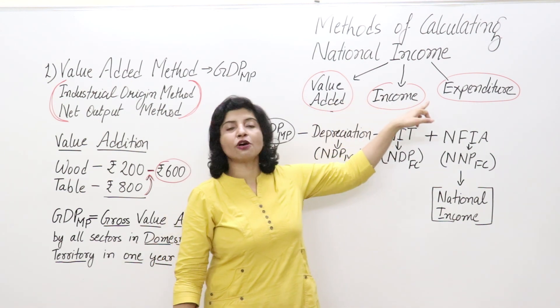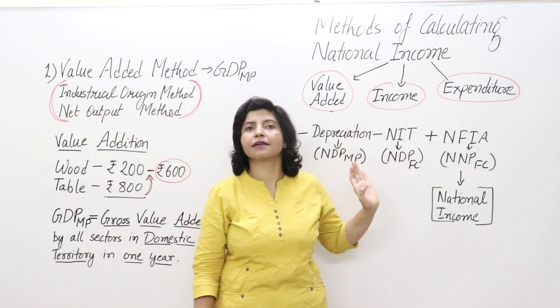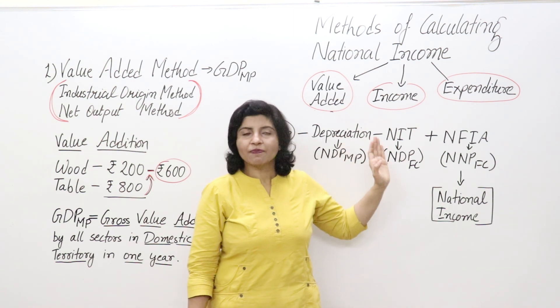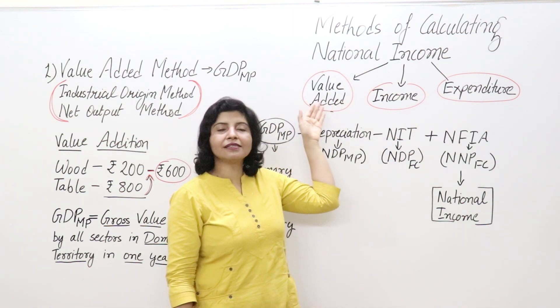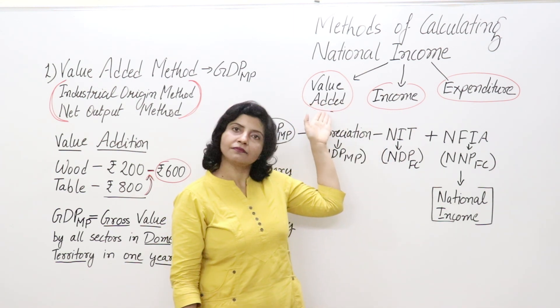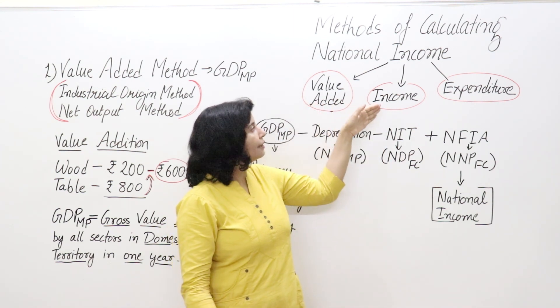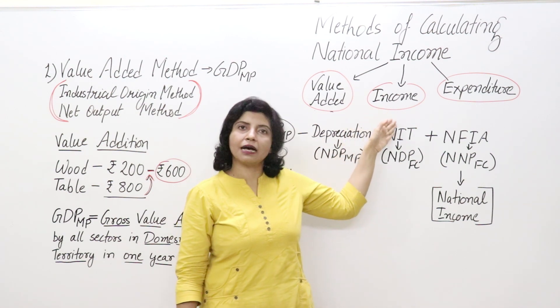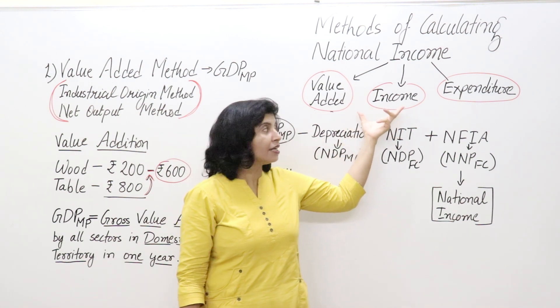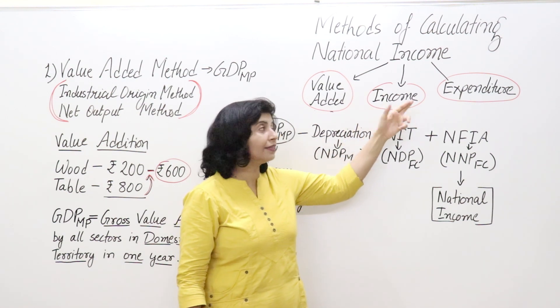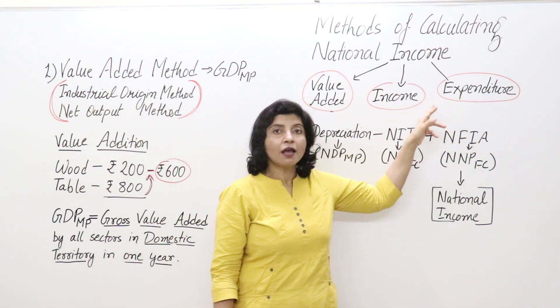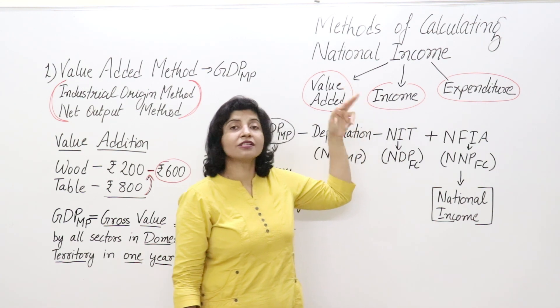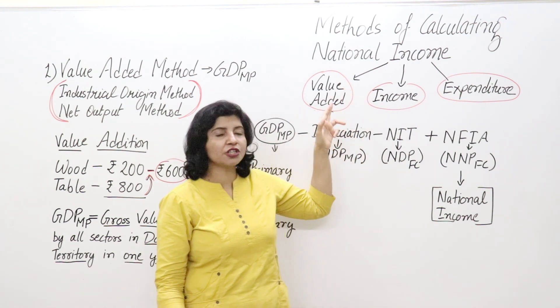Based on those three phases of the circular flow, we have three methods of measuring national income: the value added method, also known as the production method; the income method, also known as the income or distribution method; and the expenditure method.